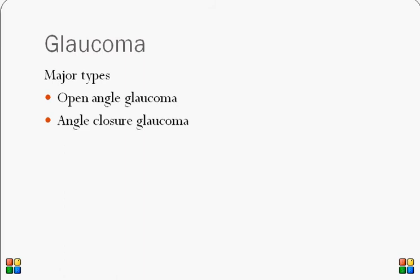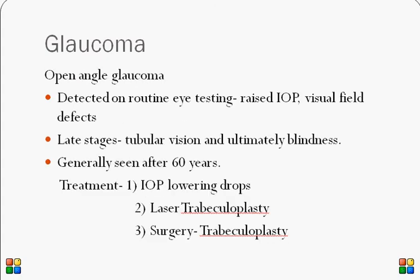The major types of glaucoma are open angle glaucoma and angle closure glaucoma. As the name suggests, the iridocorneal angle — between the cornea and the iris — determines the type. In open angle glaucoma, the angle is open but the trabecular meshwork is blocked. In angle closure glaucoma, there is contact between the iris and the cornea, called iridocorneal contact, which prevents aqueous drainage.